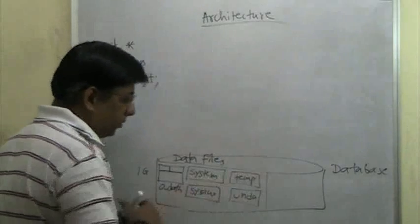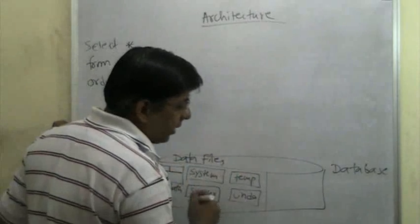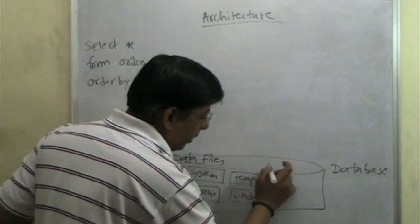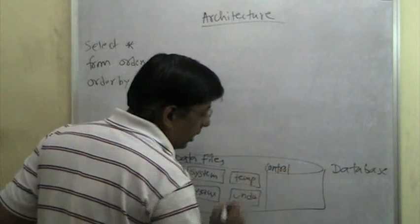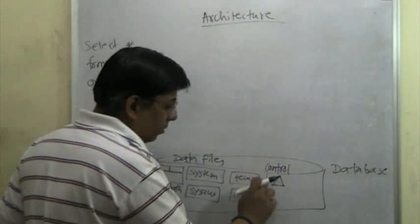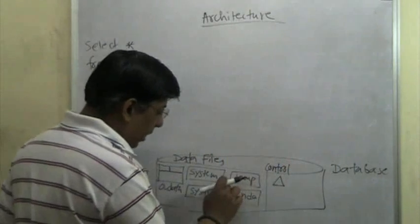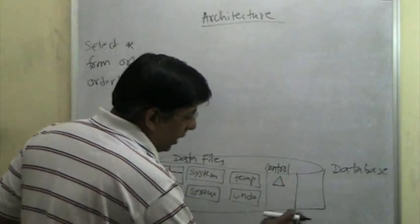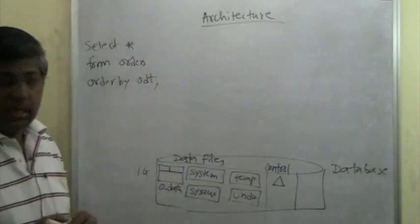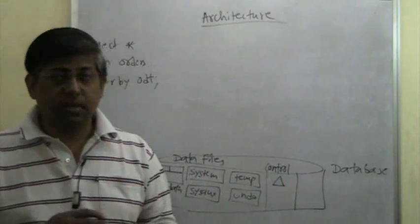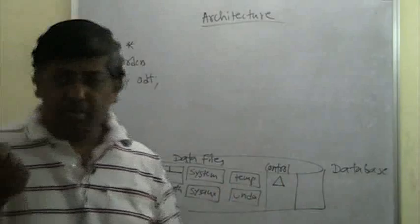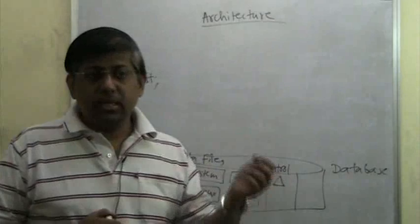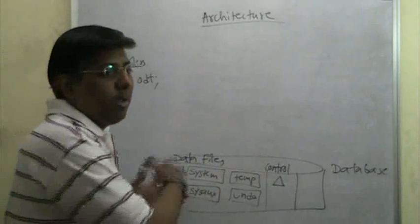Then to support the activity of a database, there is one important file called a control file. I'm going to draw it as a triangle here, just to differentiate from the square which is a data file. Control file is a very small file. Data files are bigger files in gigabytes. Control files are going to be very small files — maybe one, two, or three megabytes — and they contain information about the database.